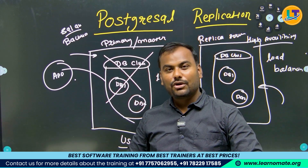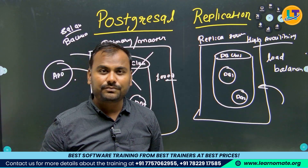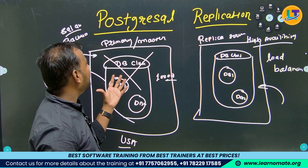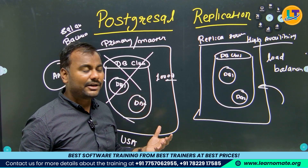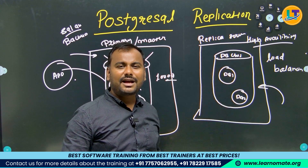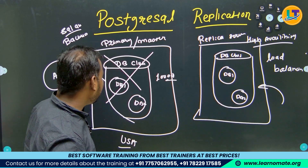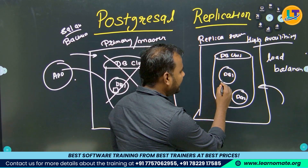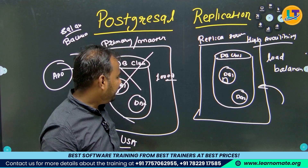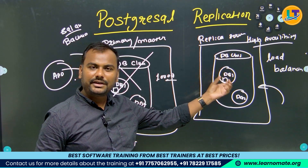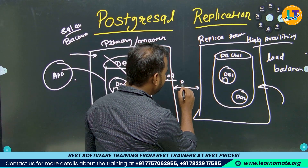PostgreSQL replication has a lot of demand in the market. Sometimes you might have data corruption on your primary side — it is going to take some time to recover your database. So if it is taking too much time, I can use the replica server and tell my client to use it, because it has the same data. Remember, if I create a table on the primary, it will automatically be created on the replica server side — you don't need to do anything.